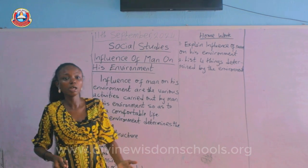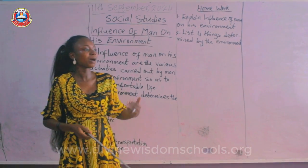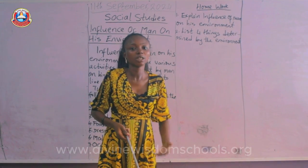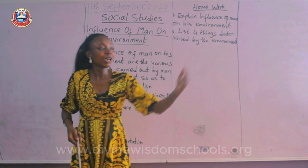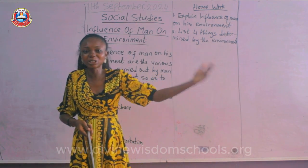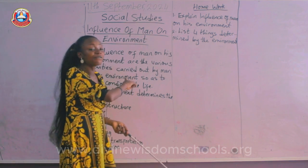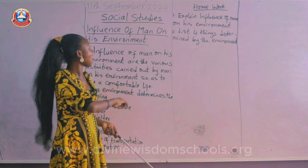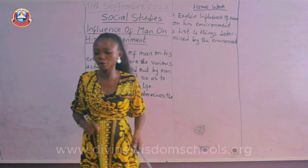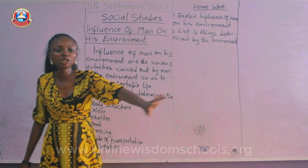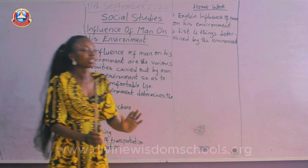The wood is processed and used to make furniture we use at home. Even the books you use are made out of paper, and paper is made from wood gotten from trees. So man has used what he has in his environment to his benefit — that is what we mean by the influence of man on his environment.